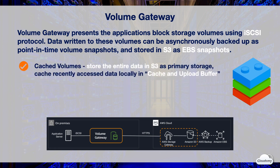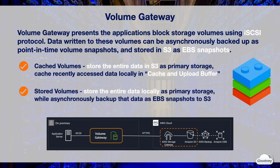With cached volumes, Volume Gateway stores all on-premises application data in S3 as the primary data storage and caches recently accessed data locally in the on-premises gateway's cache and upload buffer storage. Cached volumes offer substantial cost savings on primary storage and minimize the need to scale storage on-premises, while retaining low-latency access to frequently accessed data. With stored volumes, the gateway stores the entire data locally as primary storage while asynchronously backing up that data as EBS snapshots to S3. Stored volumes provide on-premises applications with low-latency access to their entire datasets while providing durable off-site backups. You can restore an EBS snapshot to an on-premises gateway storage volume to recover a backup, or use the snapshot as a starting point for a new EBS volume to attach to an Amazon EC2 instance.